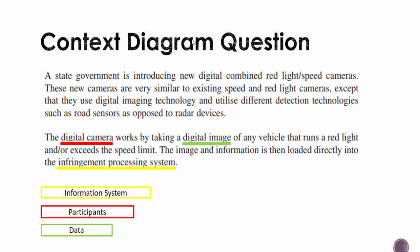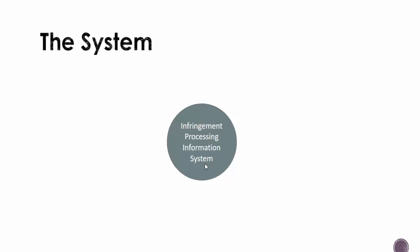Now we have to break down this question and highlight all of the important points. The most important things to create a context diagram are: you need to know what the information system is — what is it actually trying to do. You can see here it is called the infringement processing system, so this system will process infringements. You also have to find out who the participants are — the people or things that either give or receive data. Finally, you have to find out what data is actually being transferred.